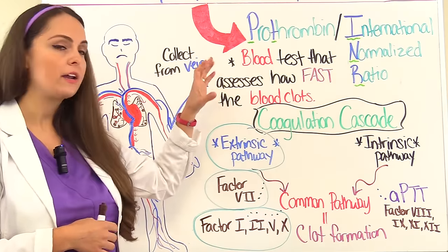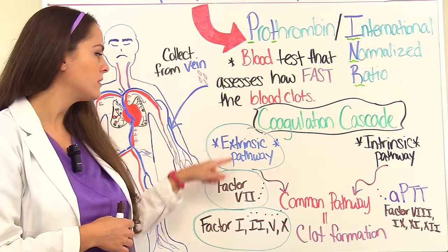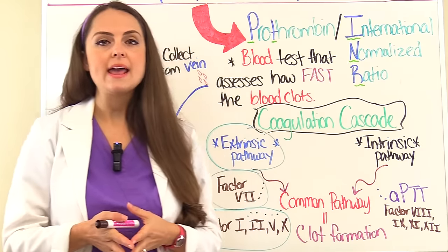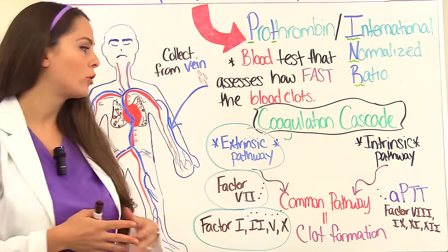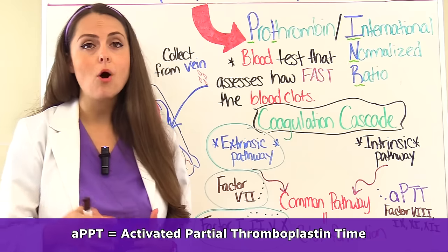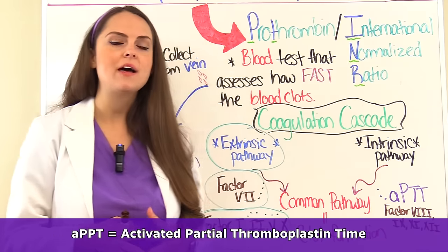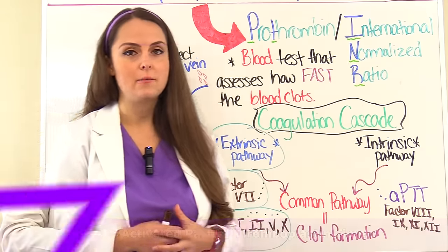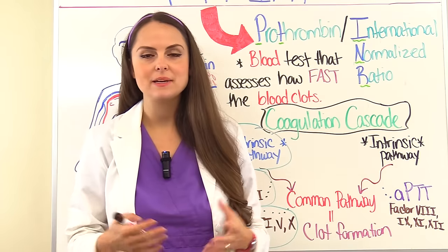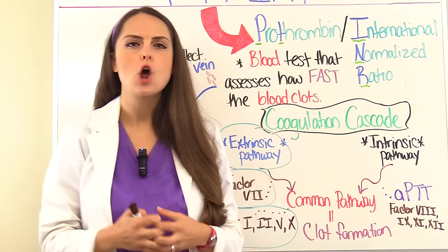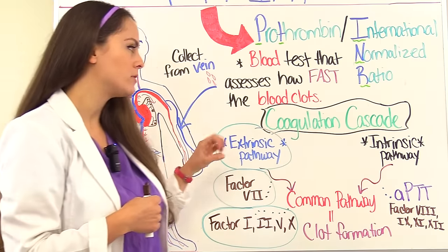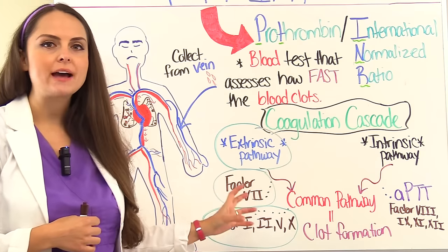The PT INR level looks specifically at the extrinsic pathway of the coagulation cascade. A lot of times it can be ordered alongside an APTT, which is an activated partial thromboplastin time. Now let's talk a little bit more about prothrombin and the coagulation cascade, because this is going to help us truly understand what we're looking at in these patients whenever we're collecting these lab results, specifically the clotting factors that are involved.